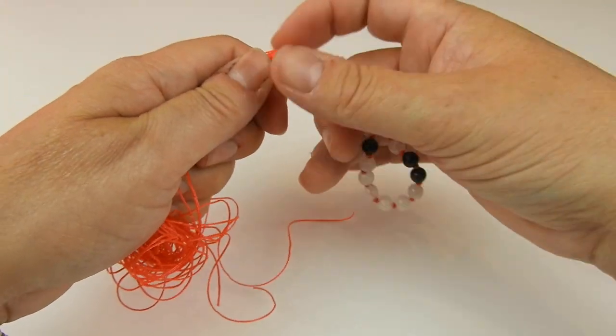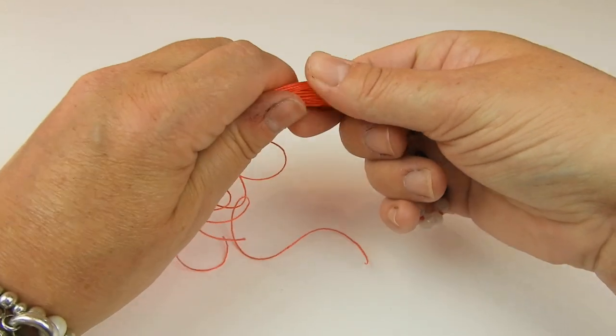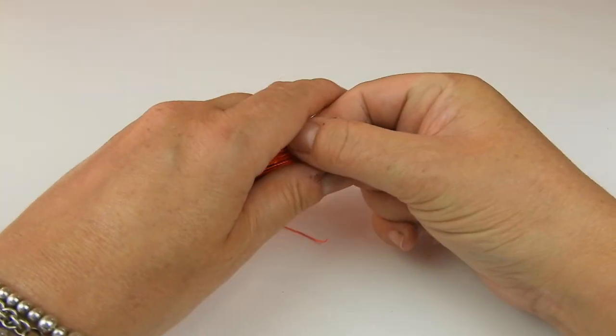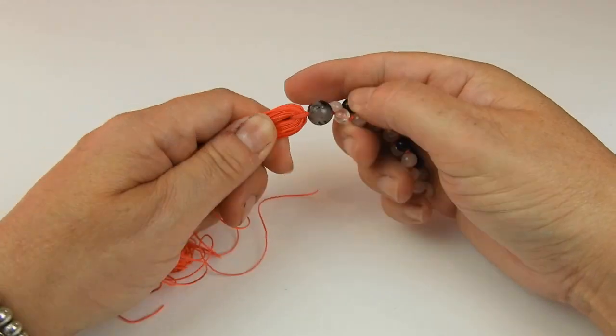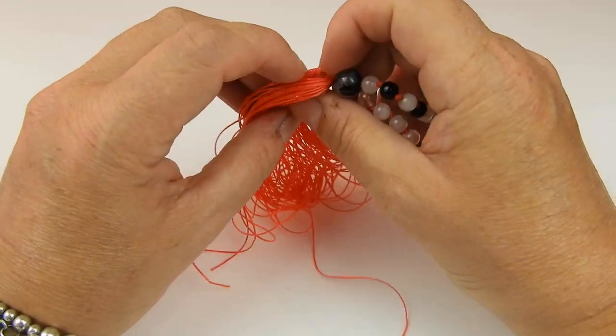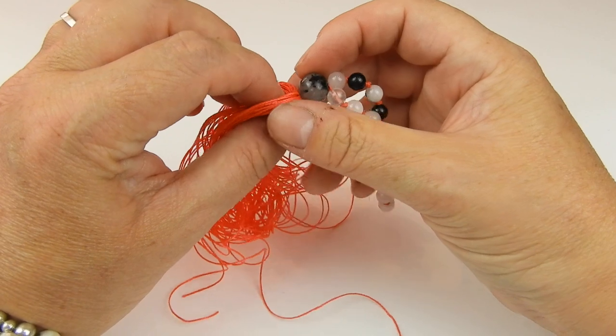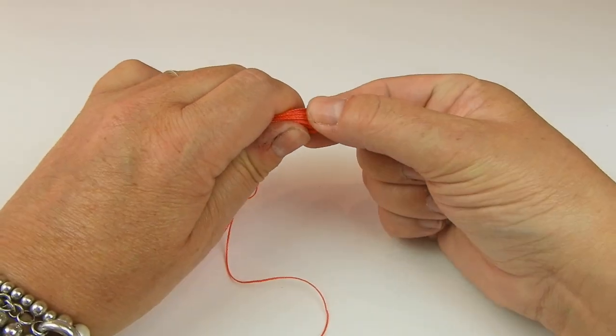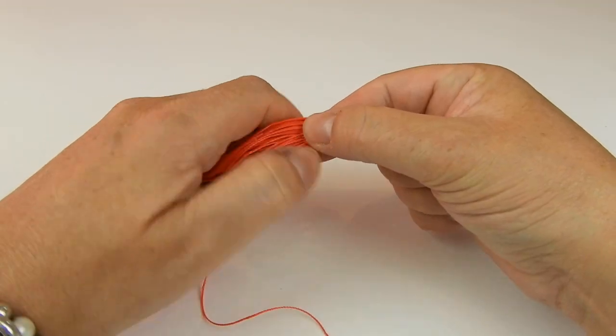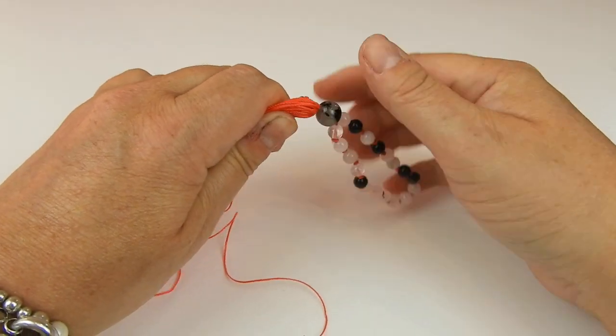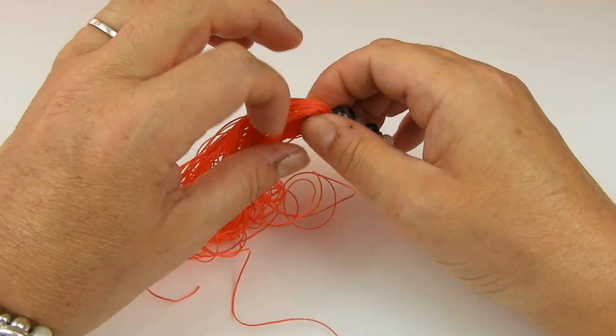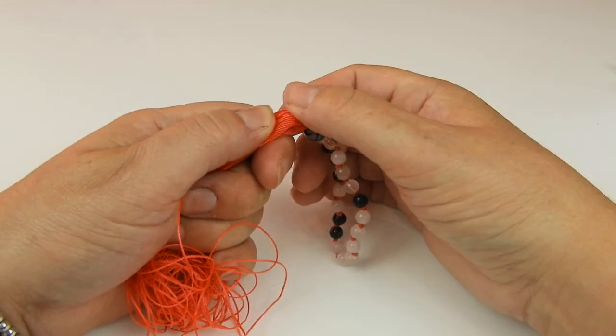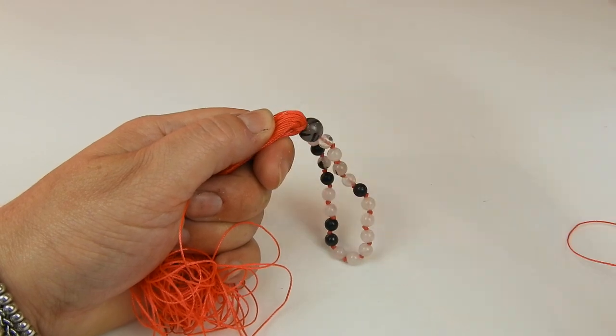You can just sort all that through to make sure that it's all nice and level. I've got that tied in place, sorted out all of the loops so they're all roughly the same size at the bottom here.